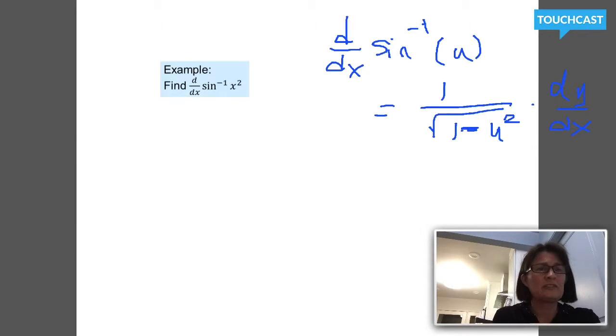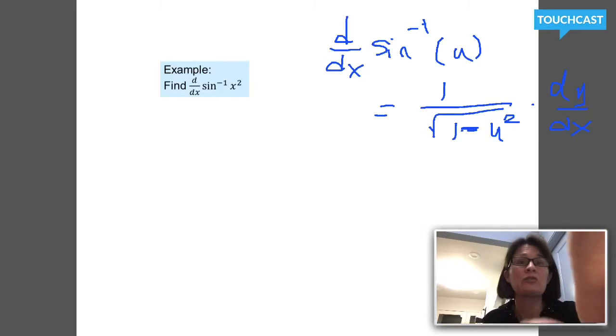Here's our first example. Find the derivative with respect to x of inverse sine of x squared. I can recognize here that my inside function, I'm going to have to use the chain rule. My inside function, the thing that was getting inverse signed, is x squared. So I'm going to write myself a note that u in this case equals x squared.